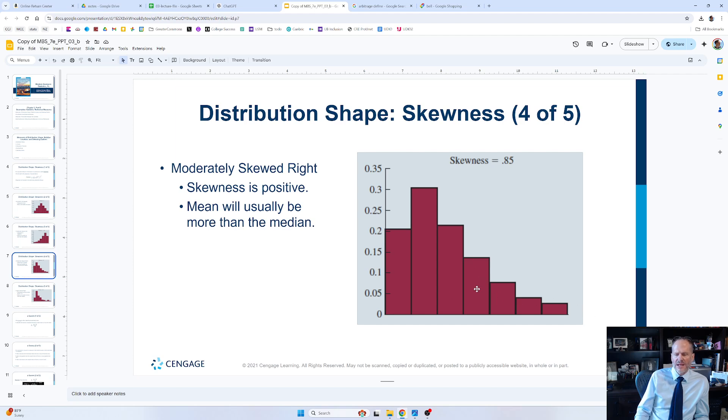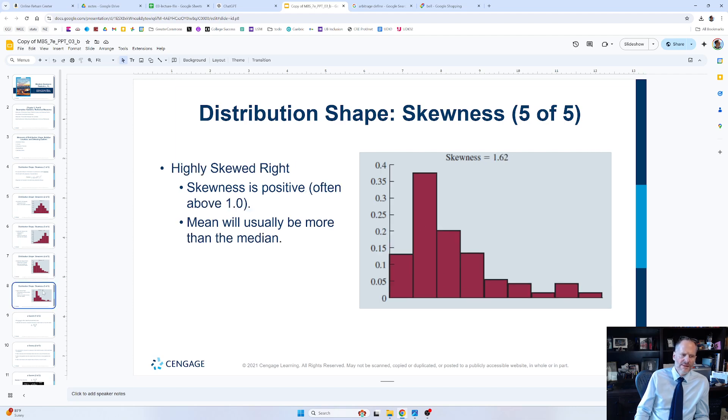We have more values out to the right. So the more values out to the right are going to increase the mean. The mean will be bigger than the middle of the data.